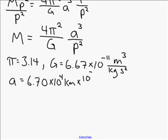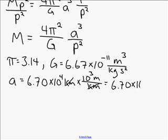So we're going to convert, multiply it by 1,000, which is 10 to the 3 meters per kilometer. Kilometers are going to cancel. And this will be 6.70 times 10 to the 7 meters. That's 67 million meters.